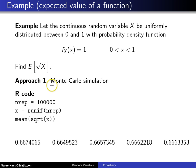First, let's take a Monte Carlo simulation approach. Here is some R code where the variable nrep is set to 100,000 replications. Then we take the vector x and assign it to 100,000 uniform(0,1)s. In other words, 100,000 realizations of this particular random variable.